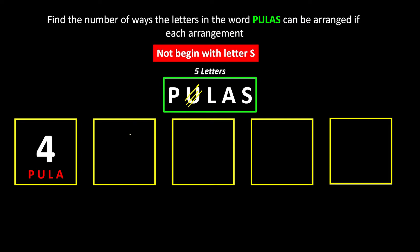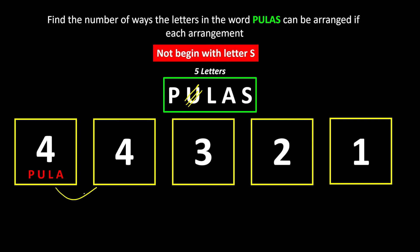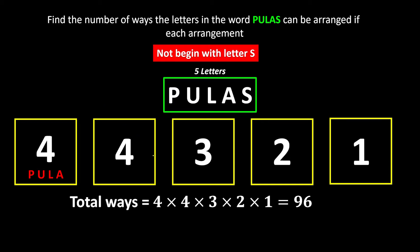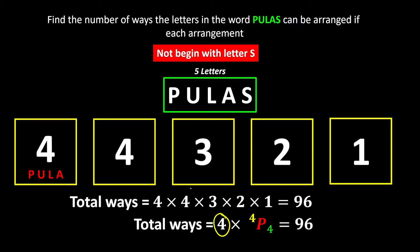Let's say I pick U for the first slot — now we are left with 4 remaining letters that can rearrange themselves in the remaining 4 slots. Since the letters are picked one after another, we can use the multiplication rule. Multiplying all together we have 96 ways, which I can write as 4 × 4P4 — the first 4 is for the first slot with the condition, and the remaining 4 letters rearrange themselves in the 4 slots.